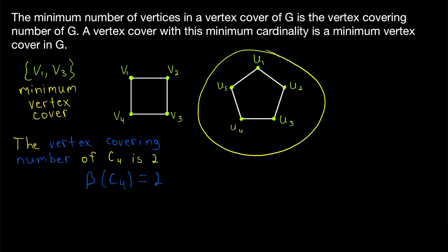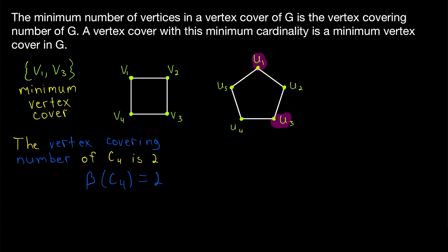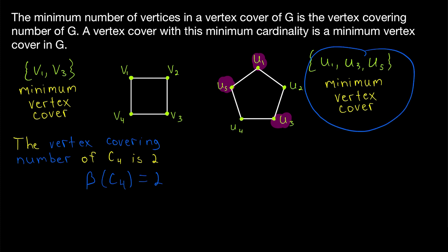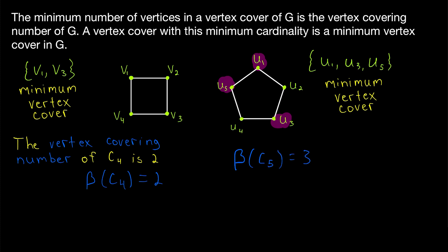For another quick example, we could look at the five cycle. If we include the vertices u1 and u3 in a vertex cover, we'll have almost all edges covered except for this one down here. So we're going to need one more vertex — it doesn't matter if we include u5 or u4 — let's say we include u5. Then this vertex subset containing u1, u3, and u5 is a vertex cover of C5, and it happens to be a minimum vertex cover. Since the minimum number of vertices in a vertex cover of C5 is 3, that is the vertex covering number of C5, and so beta of C5 is 3.